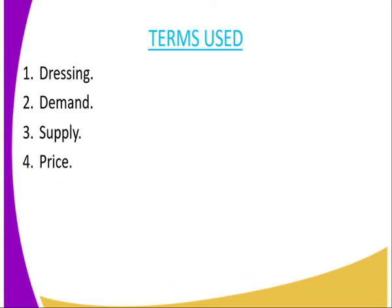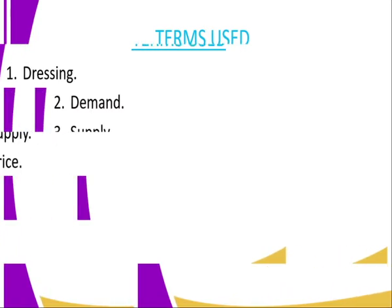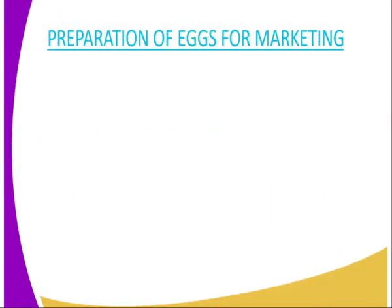Then we will go to price — that is the monetary value attached to a commodity. That is what we refer to as a price.